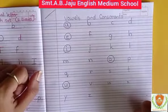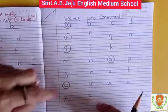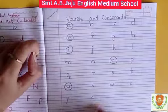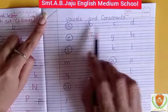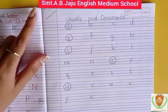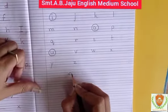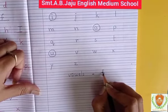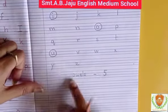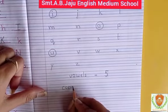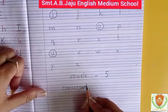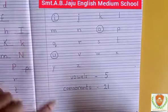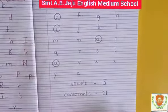Do you know how many letters are in the alphabet? A to Z — 26 letters. How many are vowels? 5 vowels. So, 26 minus 5 vowels — how many consonants are there? 21. There are 21 consonants. Let's write here: vowels — 5, consonants — 21. A, E, I, O, U — there are 5 vowels.